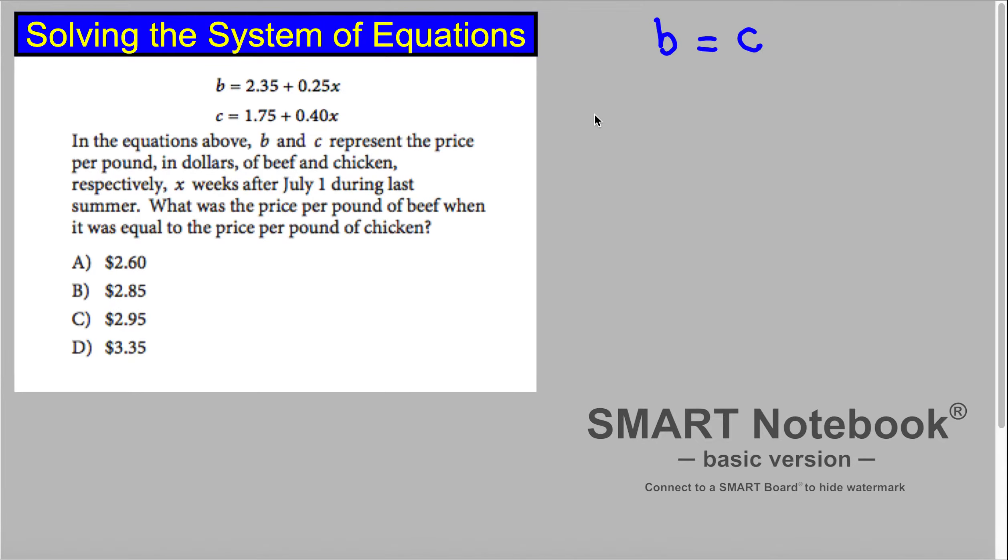So now we're taking this equation B, which means the equation for the price of the beef, which is 2.35 plus 0.25x, is equal to the price of the chicken, which is 1.75 plus 0.40x.